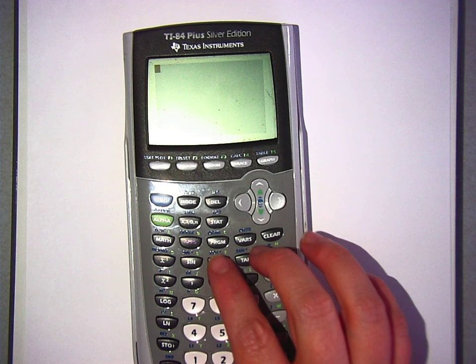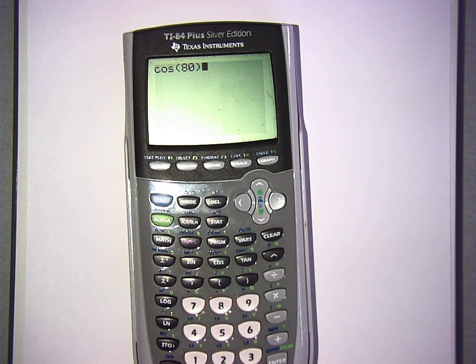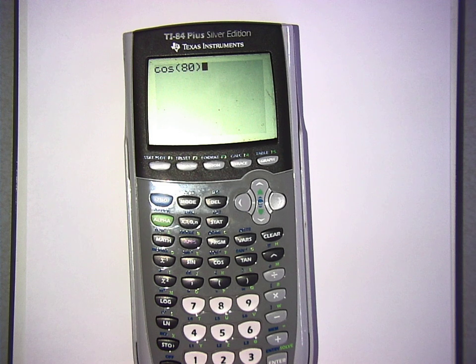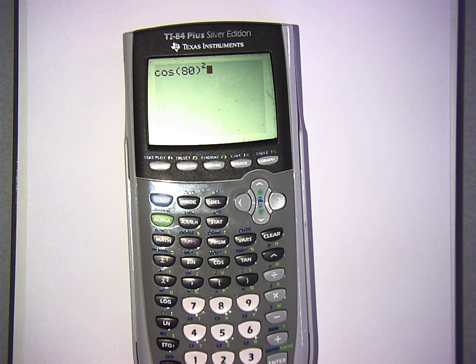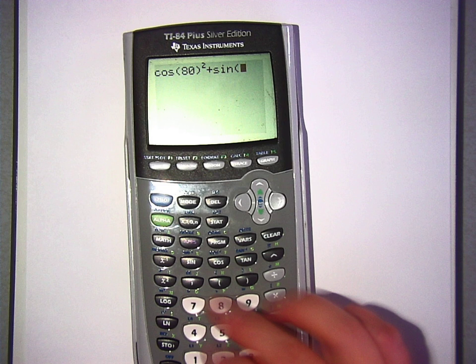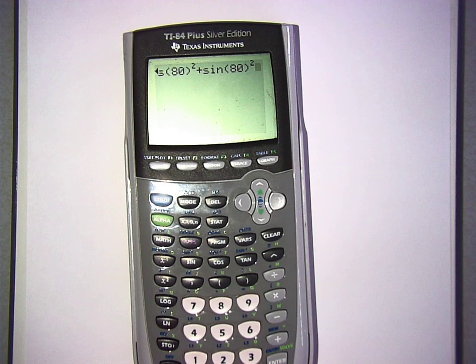Now, you're going to say the cosine of, pick an angle. Don't pick 80. I picked 80. You don't pick 80. And then put a square in there. It's squaring, by the way, the whole cosine of 80, not squaring just 80. And then write plus the sine of, again, I'm using 80. You can use whatever number you want, as long as it matches the first number you chose to use. Just pick two of the same number. Hit enter.